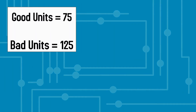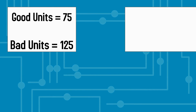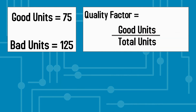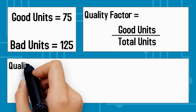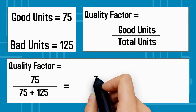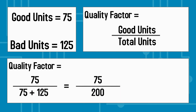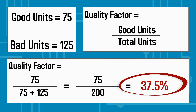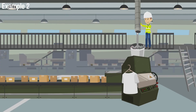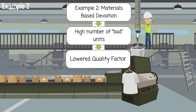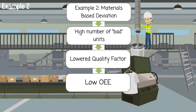The quality factor is calculated by dividing the number of good units by the number of total units, which is the sum of good and bad units. Plugging in the data, the numerator is 75 and the denominator is 200. Dividing the two numbers returns a quality factor of 37.5%. This was an example of a materials-based deviation, which caused a high number of bad units to be produced, lowering the quality score and resulting in low overall equipment effectiveness.